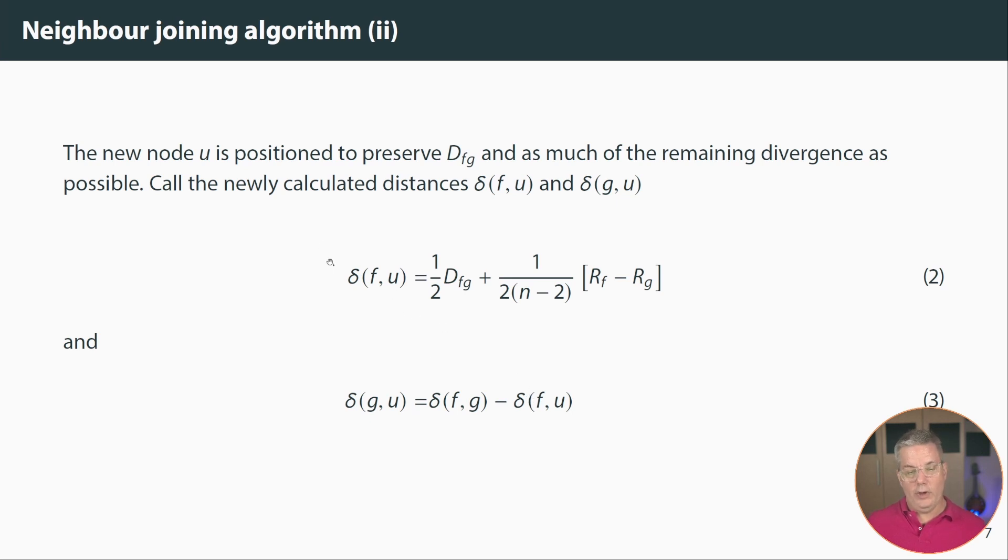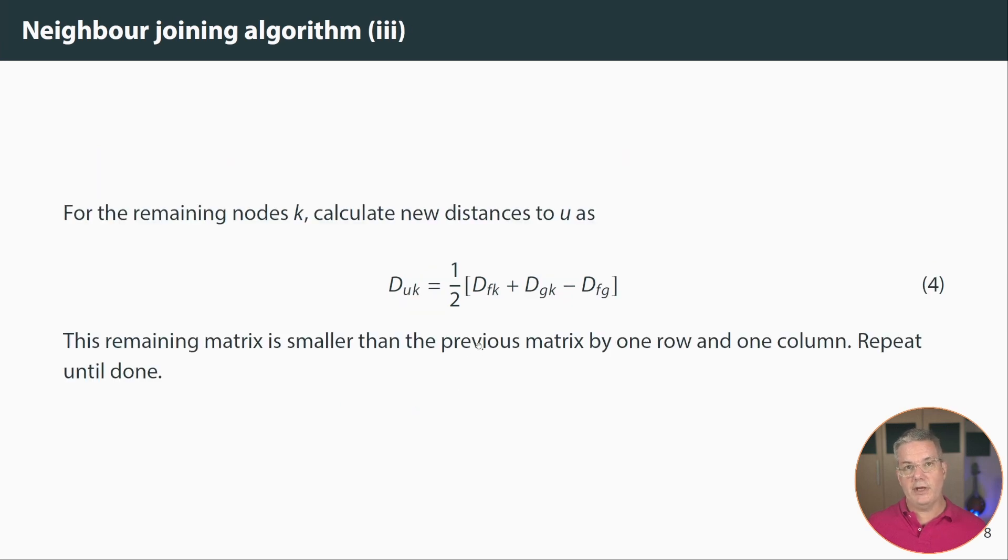So at this point we have positioned that node u and we have our branch links to f and g, but we don't have a new distance matrix. So what we do then is we calculate a new distance matrix that has u instead of f and g. And for that we just calculate these distances as one half of the distance between the nodes we're losing. So we're adding those distances together and averaging them and then we're subtracting the difference between them. And so this will preserve as much of that as possible. And then the remaining matrix is then smaller than the previous matrix by one row and one column and then we repeat until done. So let's walk through a worked example.